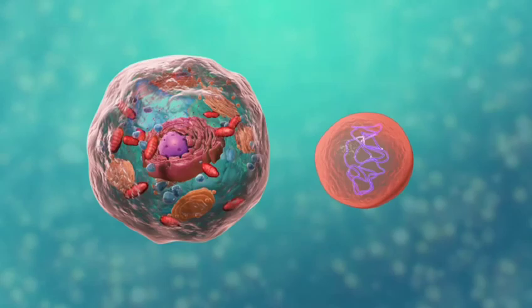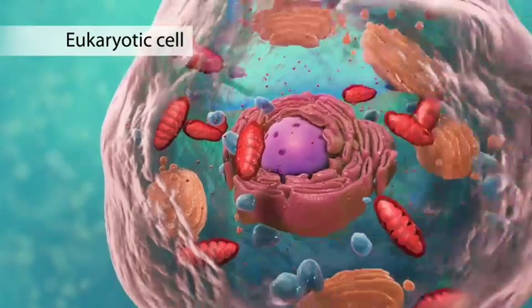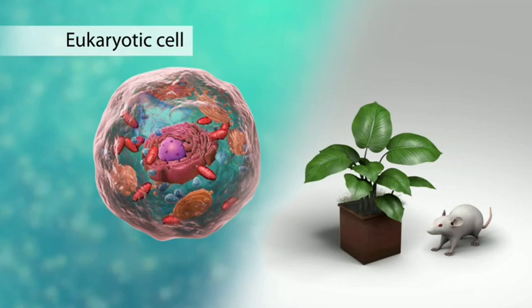There are two broad categories of cells. The first category is eukaryotic cells. They have organelles, which include the nucleus and other special parts. Eukaryotic cells are more advanced, complex cells, such as those found in plants and animals.